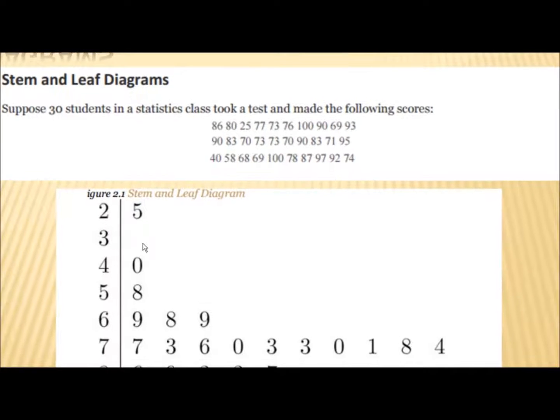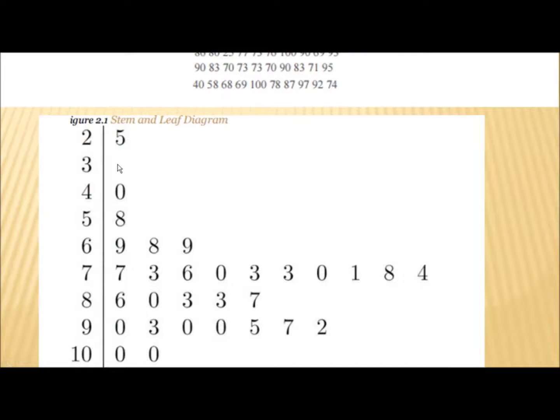One student got 40, one student got 58, three students made 69, 68, 69, and many students in the 70s, students in the 80s, several students in the 90s—one, two, three, four in the 90s. Remember this is not ordered. Two students made 100, so it's 10 and 0. These are the tens, hundreds, and the units place.